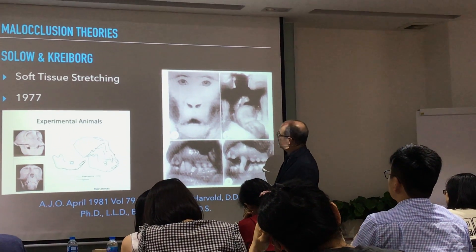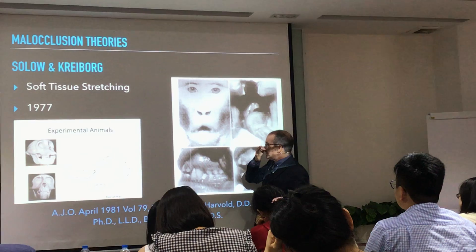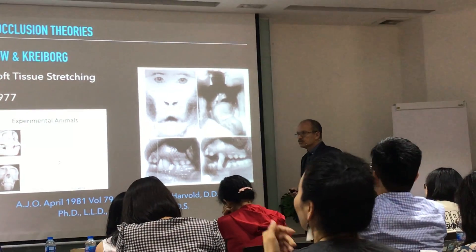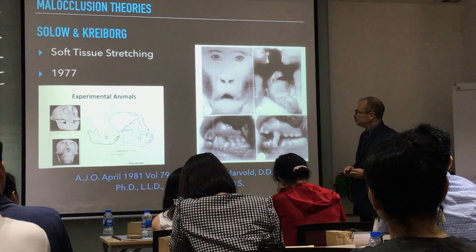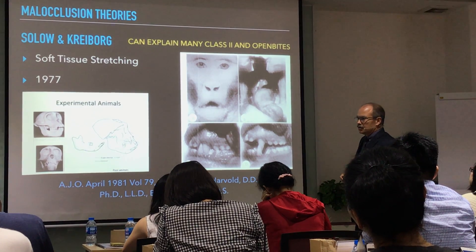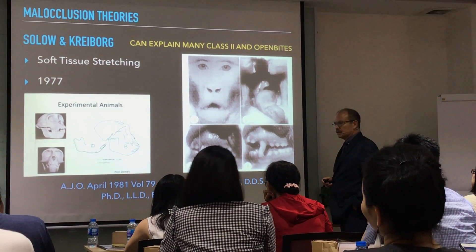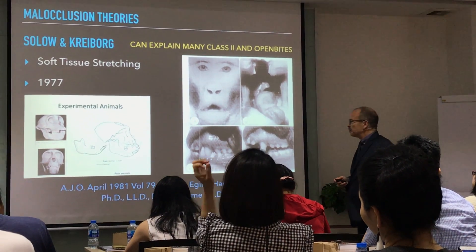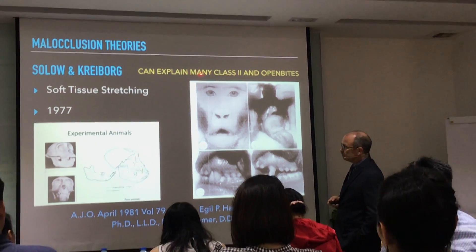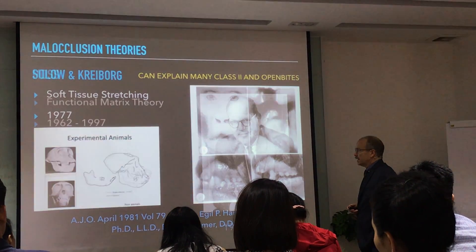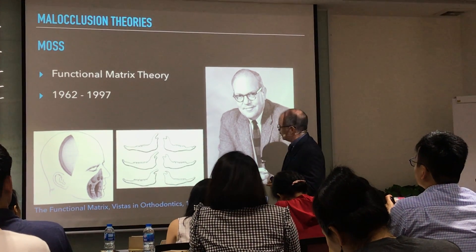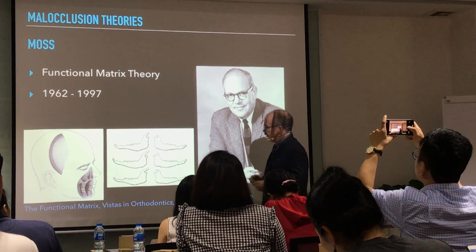So this produces a vicious cycle. If you treat the malocclusion but you stay with the functional problem, you may have a relapse or have trouble correcting the malocclusion. This theory can explain some breathing-related problems such as open bites, some class 2 problems, and even divergent craniofacial patterns.